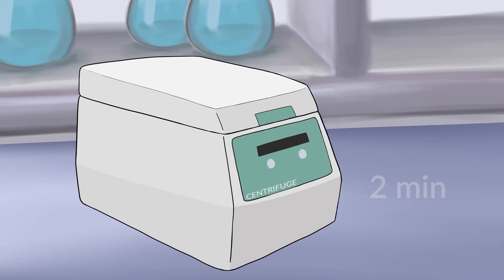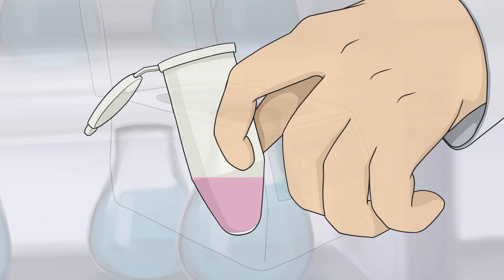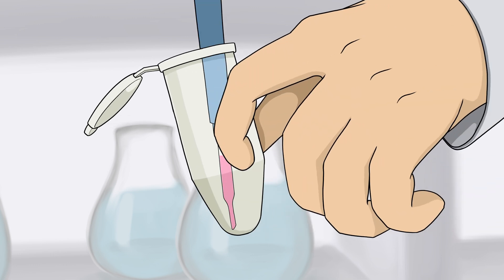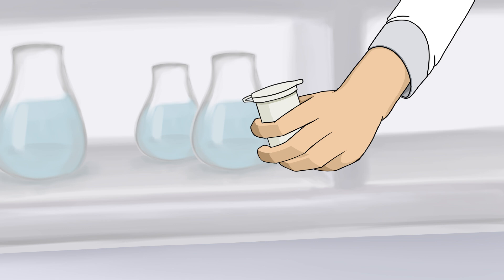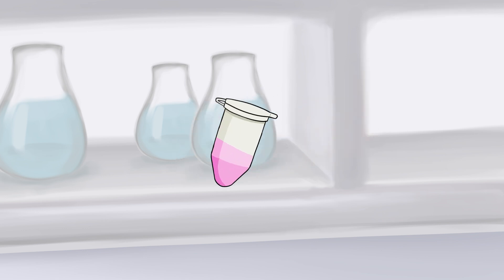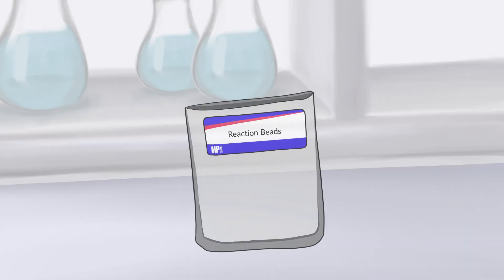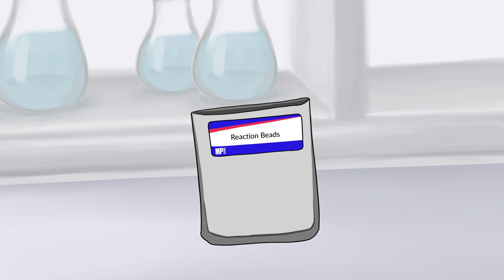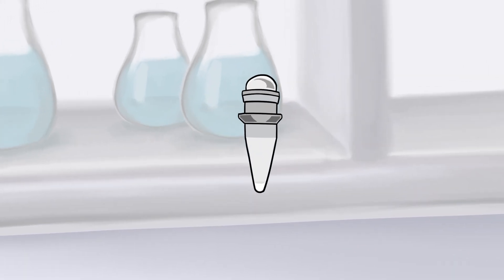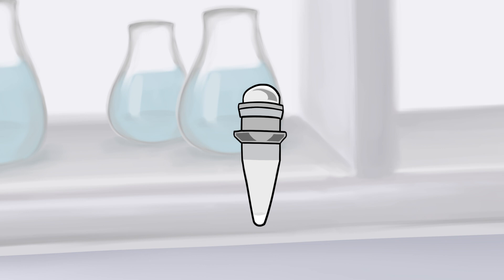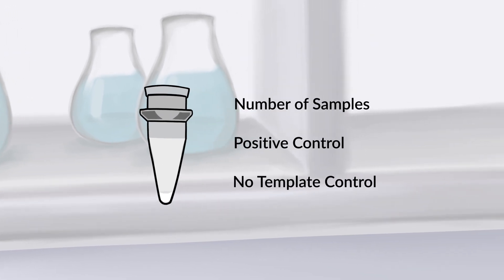Carefully transfer the supernatant to a fresh 1.5 milliliter centrifuge tube. The supernatant is now ready to be used immediately, or it can be stored at minus 20 degrees Celsius for later use. Next, we need to prepare the reaction mix. Begin by taking an appropriate number of reaction beads provided in individual tubes. Prepare the amount based on the number of samples, positive control, and no template control.